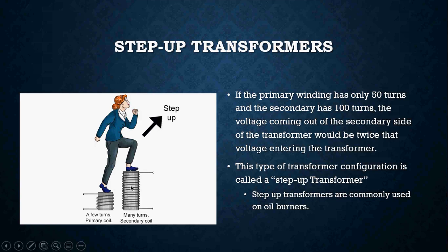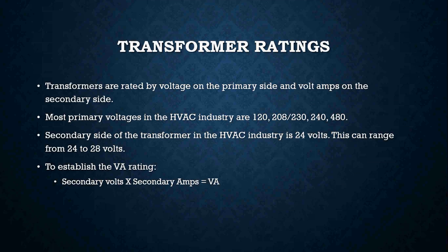Remember those two principles that a transformer works off of: it depends on the amount of electricity coming into it, but it also depends on the number of windings each coil has. Transformers are rated by voltage on the primary side and volt amps on the secondary side. The primary voltages you'll run into in HVAC are typically 120, 208, 230, 240, and 480 volts.